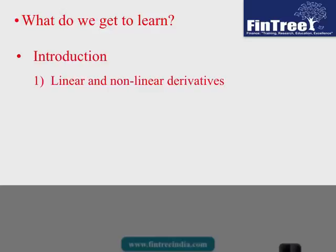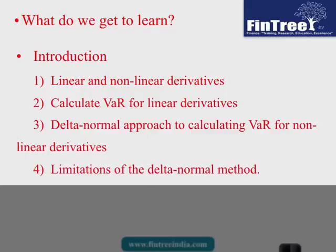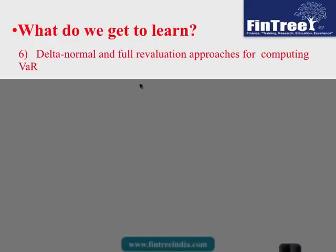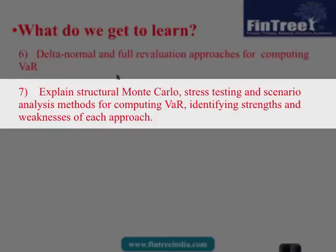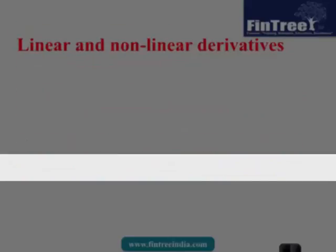This is a summary of learning outcomes. We look at linear and nonlinear derivatives, then learn to calculate VAR for linear derivatives, the delta-normal approach to calculate VAR for nonlinear derivatives, and the limitations of this approach. Then we cover the revaluation method for computation of VAR, the delta-normal full revaluation approach, Monte Carlo use, and correlation breakdown worst case scenario.